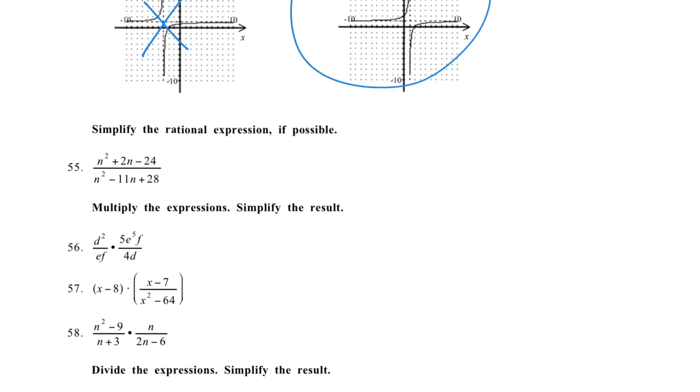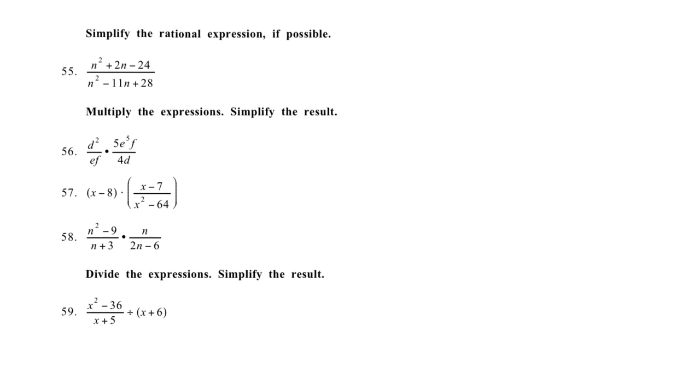Looking at number 55. Simplify. Factor, factor, factor. If you're looking to simplify rational expressions, you need to factor the top and bottom and then cancel things out. So n squared plus 2n minus 24 is n plus 6 and n minus 4. Those multiply to negative 24 and add to positive 2, and two numbers that multiply to 28 and add to negative 11, n minus 7 and n minus 4. Now I can divide out my n minus 4, and my final answer would be n plus 6 over n minus 7.